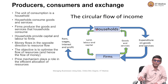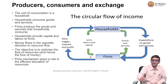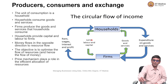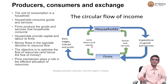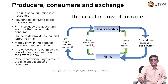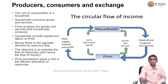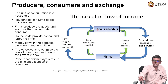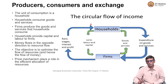The firms in return take land, labor, and capital. For land, they have to pay some rent; for capital they have to pay maybe dividend or interest, depending on whether it is taken as debt or as share capital. And for labor, they have to pay salaries and wages. So rent, wages, interest, profit — all that goes back from the firms to the households.